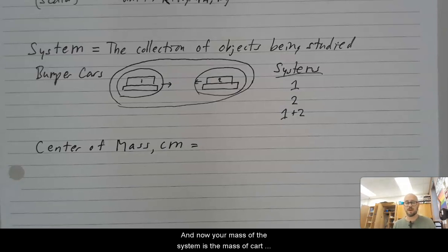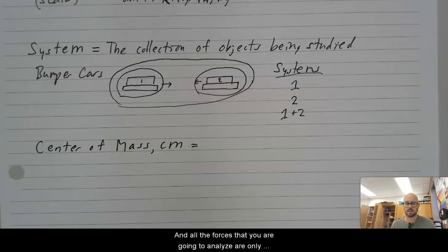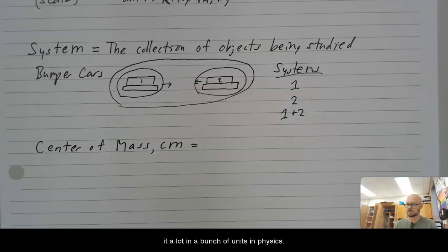And now your mass of the system is the mass of cart one plus the mass of cart two. And all of the forces that you are going to analyze are only the forces that come from outside the system. So when carts one and two collide, that's the two parts of your systems interacting. And that doesn't count for a force acting on the system. We see that that's internal. So you do this maybe a little bit in chemistry when you talk about energy. But we're going to talk about it a lot in a bunch of units in physics. So that's just to introduce it here.